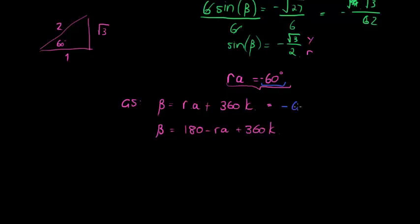In other words, this becomes negative 60 degrees plus 360 times k, where k is an element of integers. And in this one, if I replace that with a negative, it becomes negative negative. Negative times negative is positive 180, plus 60 gives me 240.